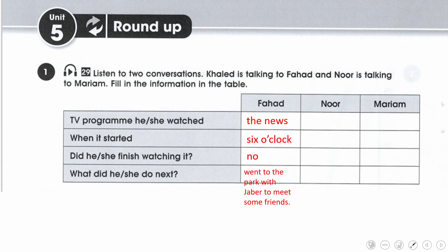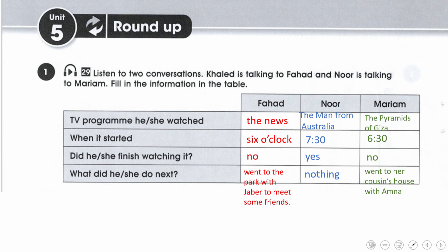بالنسبة لنور: البرنامج الذي شاهدته هو The Man from Australia، وقت العرض كان 7:30، وأنهت مشاهدته - Yes. ما الذي قامت به بعد ذلك؟ Nothing - لم تقم بشيء لأنها كانت متعبة. بالنسبة لمريم: البرنامج هو The Pyramids of Giza، وقت العرض 6:30، لم تنهِ مشاهدته - No. والشيء الذي قامت به: went to her cousin's house with Amna.